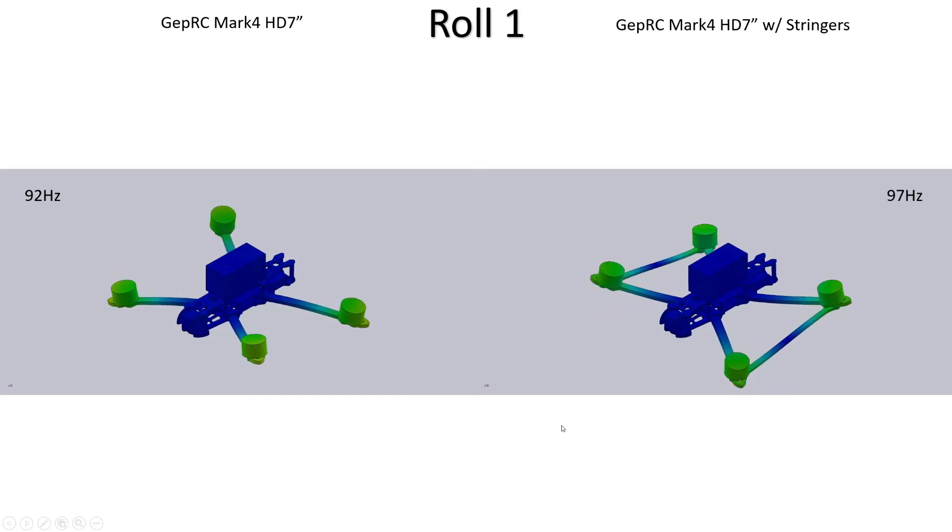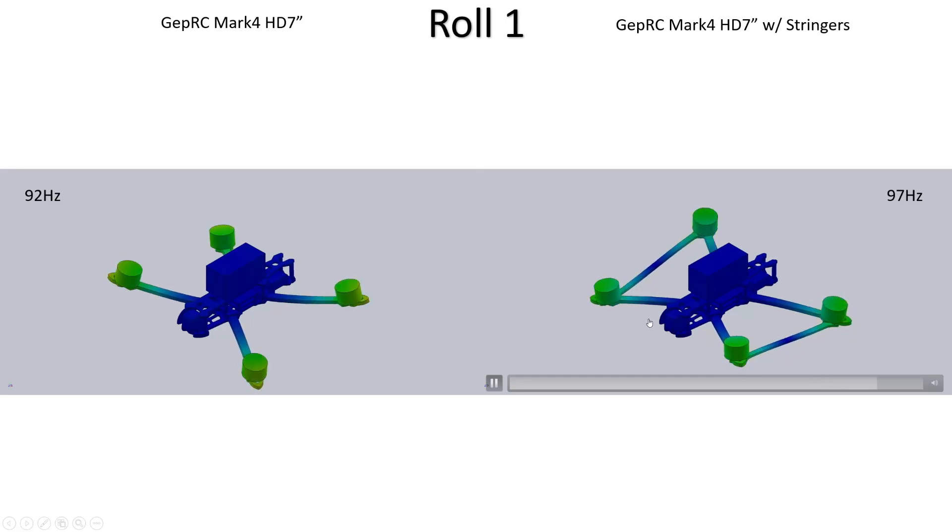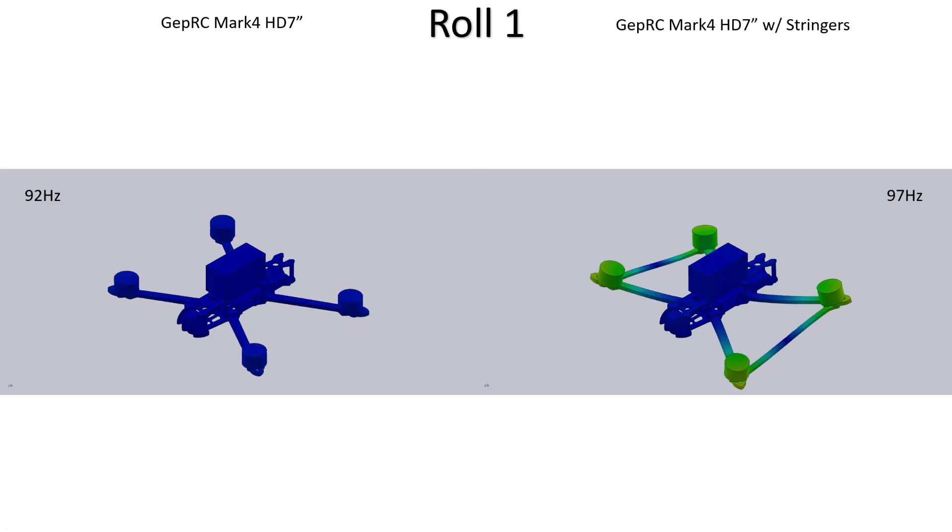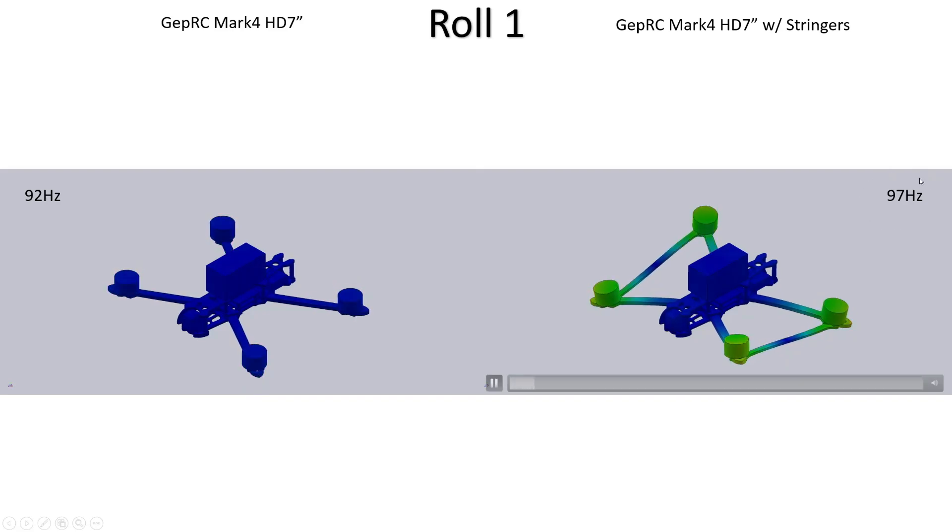If you compare that now to with the stringers fitted you see the mode shape looks really similar but there is a small amount of bending going on of the stringer particularly where it's close to the motors at either end. This additional bending, this extra carbon that has to be bent in order for the resonant mode to happen is giving it a bit of extra stiffness, leading to an increase in frequency up to 97 Hz. It's only a few hertz but every little bit really helps when you're looking to reduce the effect of noise and vibration on the gyro.